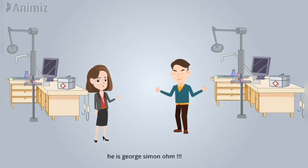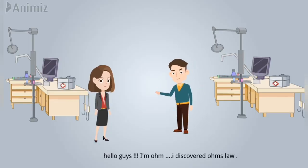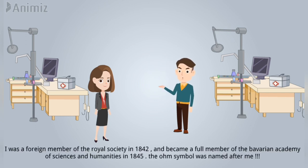Okay, come on. Here is George Simon Ohm. Hello guys, I am Ohm. I discovered Ohm's law. I was a foreign member of the Royal Society in 1842, and I became a full member of the Bavarian Academy of Sciences and Humanities in 1845. The Ohm symbol was named after me.